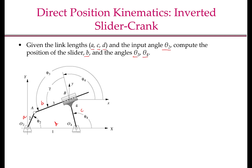The angles theta-3 and theta-4 also change as the mechanism moves. You should note that there is one difference in the problem statement of the inverted slider-crank compared to the previous two. The difference is that here we seem to have three unknown variables, whereas before we had two unknowns and obtained two equations. Although there seem to be three unknown variables here, all three of them are not independent. If you know B and either theta-3 or theta-4, you will know the other angle. In particular, gamma, which is the angle between link 3 and link 4, is always constant. And theta-3 equals theta-4 plus or minus gamma.